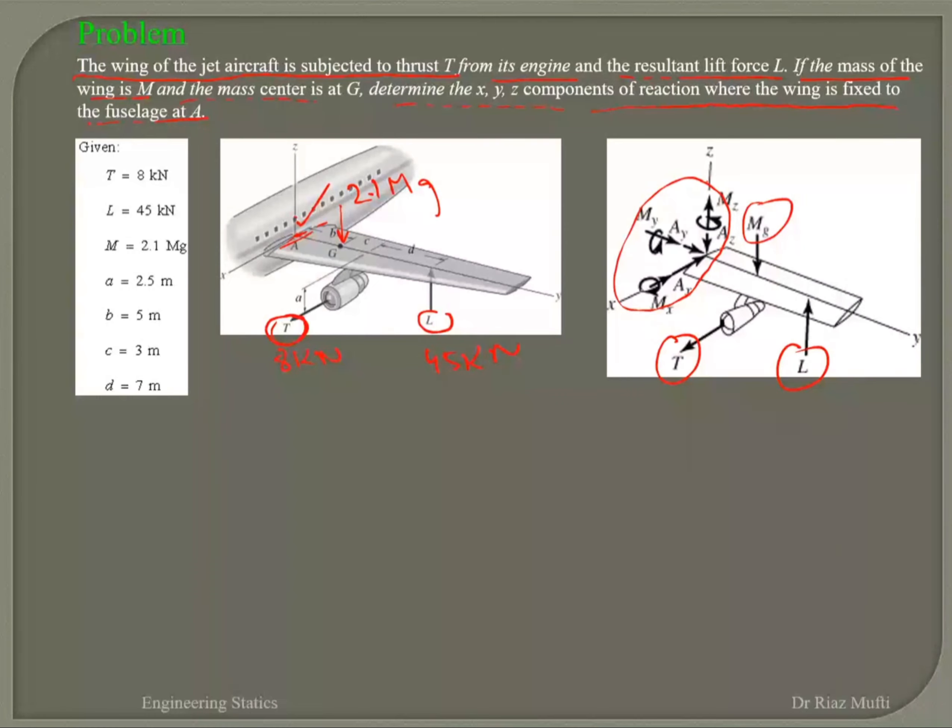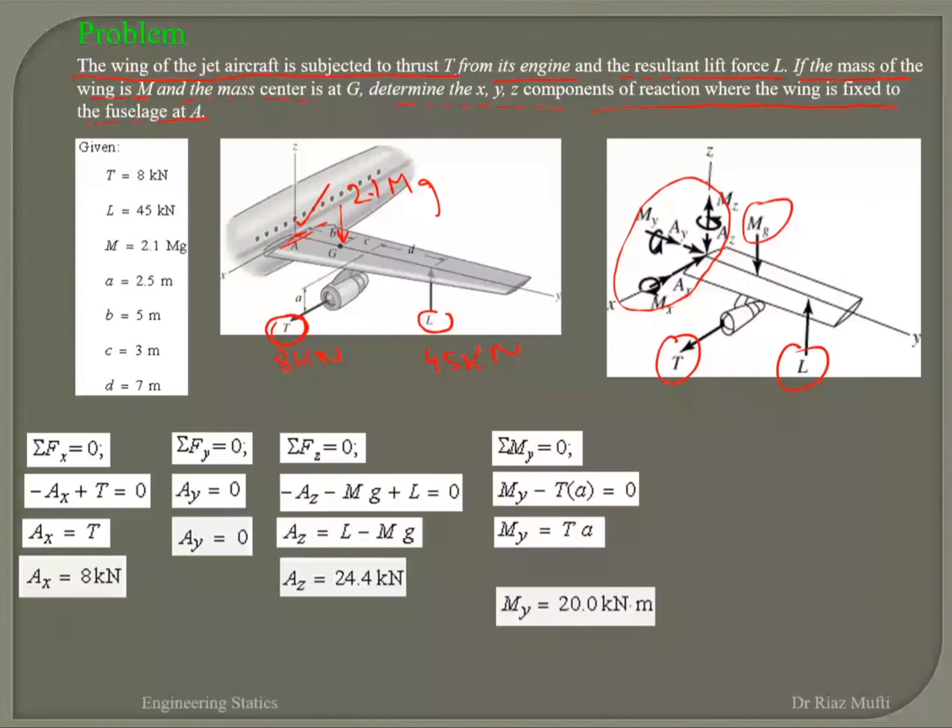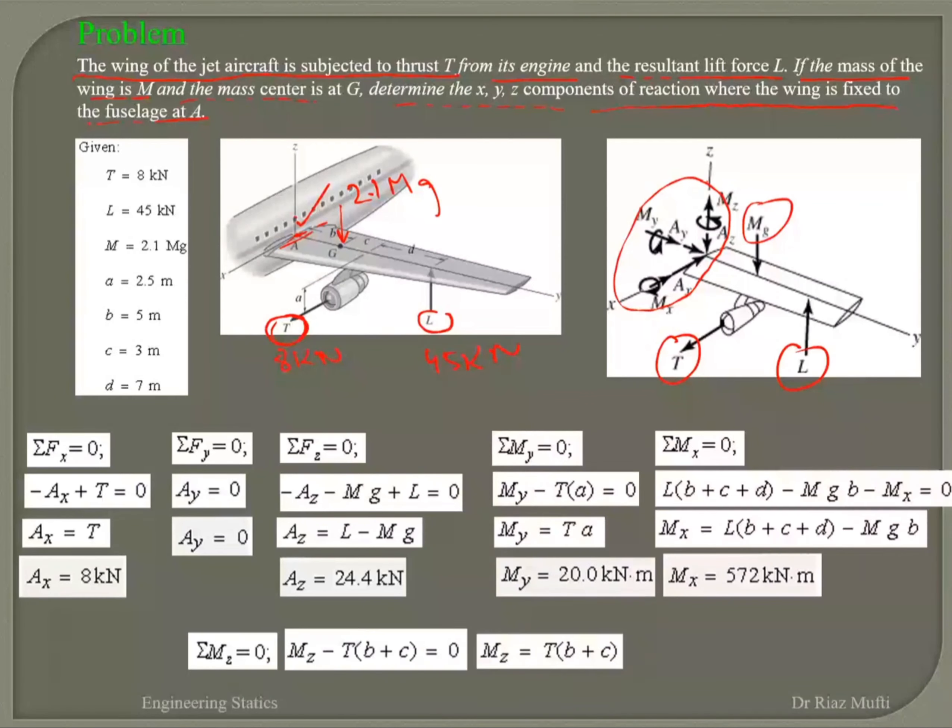Now you have to do the equations of equilibrium. Sum of all the forces along x, sum of all the forces along y, sum of all the forces along z. And then you take moments at point A, and you get your values out.